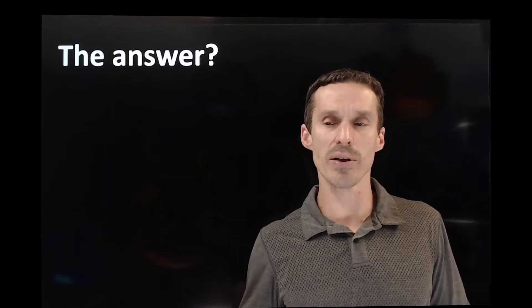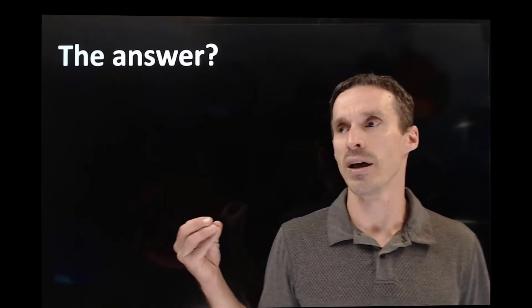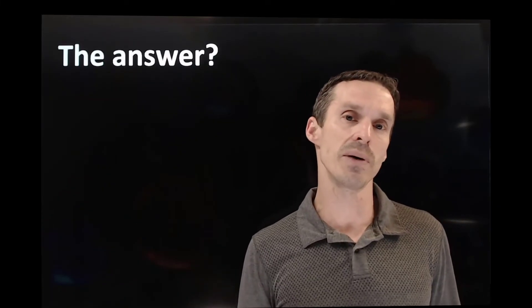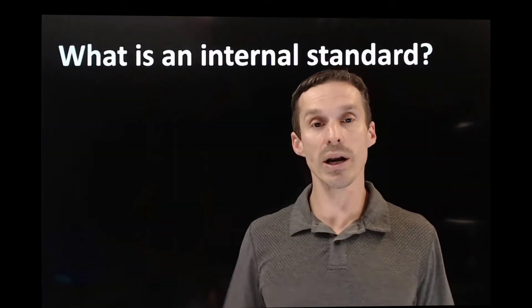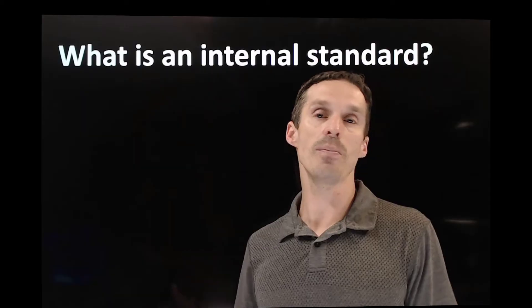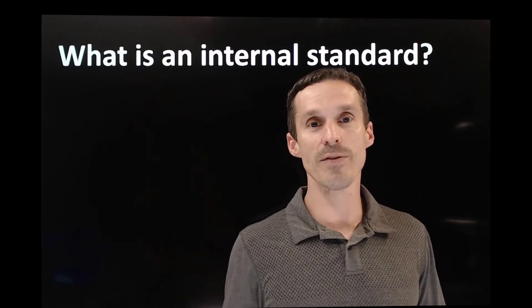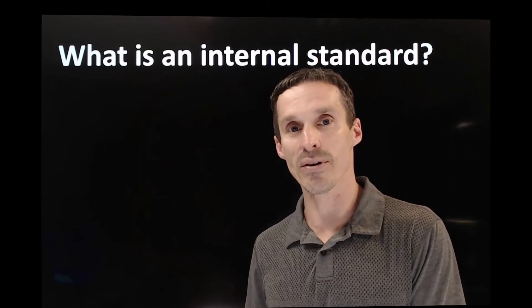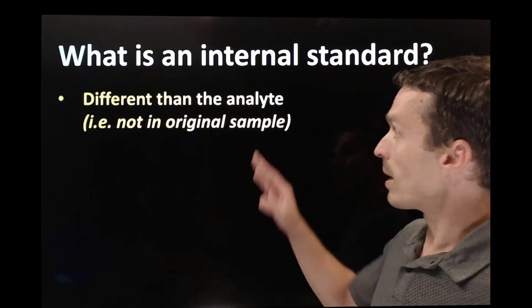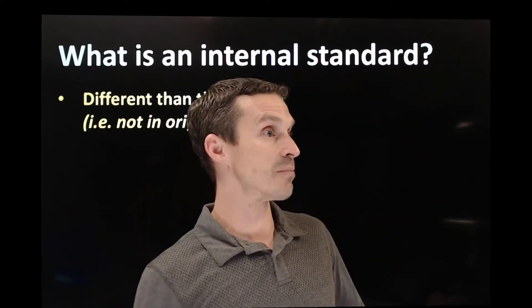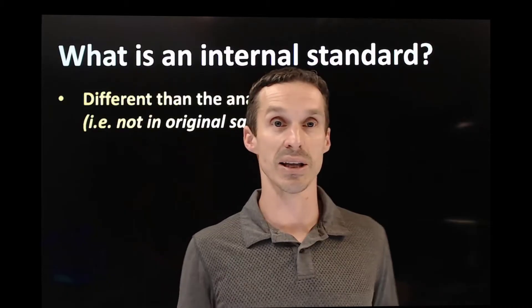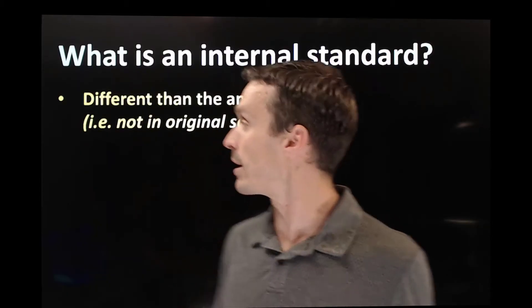We could use the method of standard additions, which would help us in a way. But the problems that we're dealing with here, the flicker in the instruments, the fact that we might inject too much or too little of a compound, these are best answered with the method of internal standards. So what is an internal standard? That's what we're talking about right now. What an internal standard is, is a compound that we use to calibrate our instrument. The big difference is that it isn't the same compound as your unknown. It's different than the analyte. You're measuring sodium, that's your unknown. You're using potassium, that's your standard. Seems weird. It's like it's a different compound.